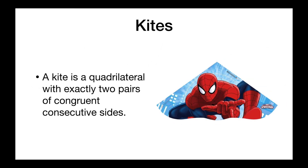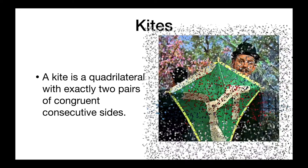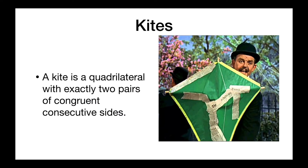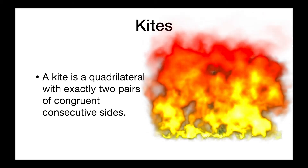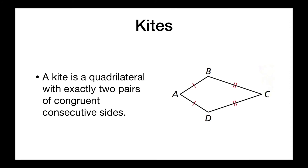A kite is a quadrilateral with exactly two pairs of congruent consecutive sides, meaning that the sides have to be congruent and they have to be next to each other. Please note it says exactly two pairs — that means that based on this definition, a square or a rhombus would not be a kite. So AB and AD are congruent, and BC and DC are congruent, but we would not call it a kite if AB was also congruent to BC.